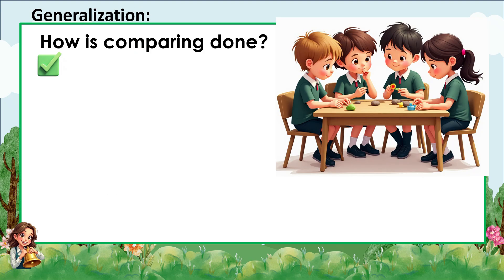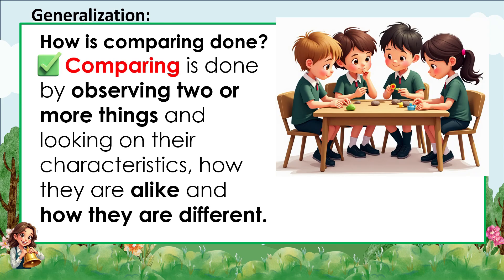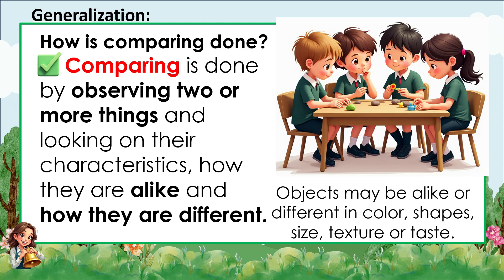Good job! For our generalization: how is comparing done? Comparing is done by observing two or more things and looking at their characteristics — how they are alike and how they are different. Objects may be alike or different in color, shape, size, texture, or taste.